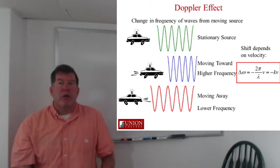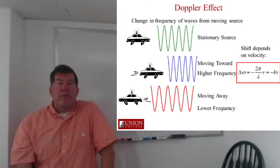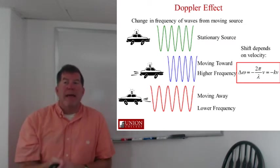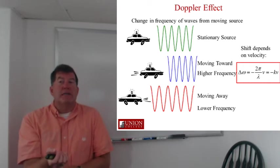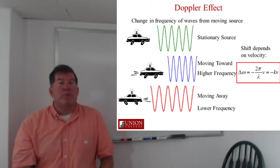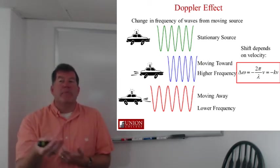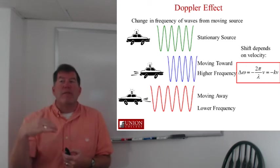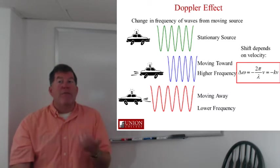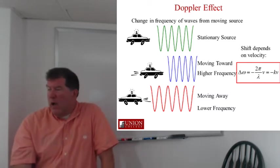This also works for light waves. And the shift depends on the velocity. The higher the velocity, the bigger the shift. We can write this in terms of the change in the angular frequency associated with the light, this delta omega. And that turns out to be equal to 2 pi over lambda times v, the velocity, or it's k times v. It's this wave number 2 pi over lambda associated with the light multiplied by the velocity of the source or of the atom that's absorbing.